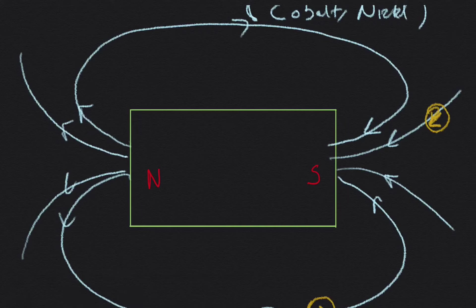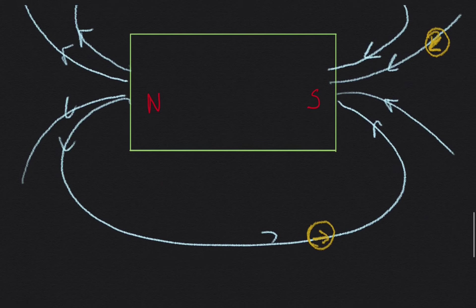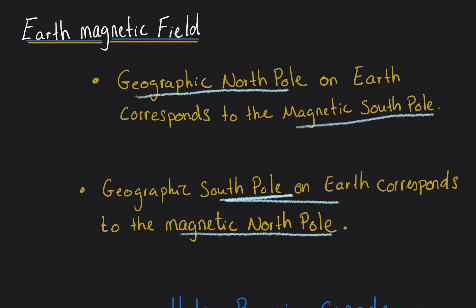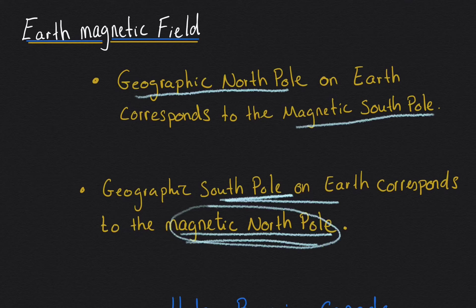If I compare this direction of field lines with the earth's magnetic field lines, we will see that the geographic north pole on earth is actually the magnetic south pole. Because the field lines are going towards the geographic north pole. And likewise, the geographic south pole is actually the magnetic north pole because that's where the field lines are leaving. The magnetic north pole will be leaving in the southern south pole.